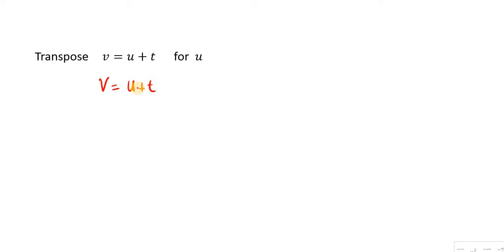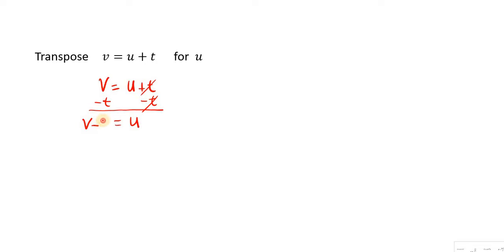We subtract T on both sides of the equal sign. This allows us to isolate U because positive T minus T cancels out to zero, so on the right hand side we'll have U. Now U is isolated and on the left hand side we have V minus T. So U is the subject. In other words, we can rewrite this as U equals V minus T, and this is our solution.